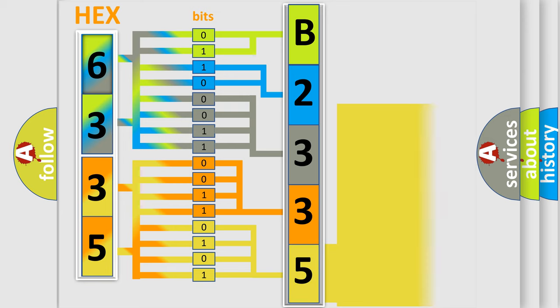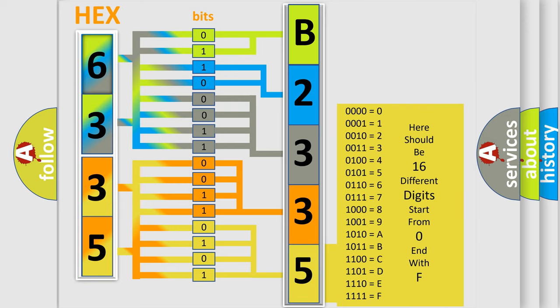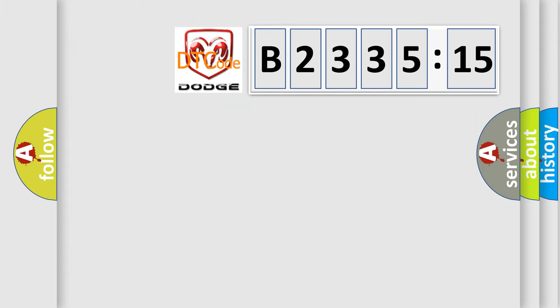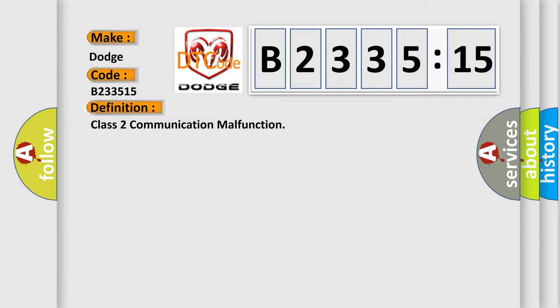A single byte conceals 256 possible combinations. We now know how the diagnostic tool translates the received information into a more comprehensible format. The number itself doesn't make sense unless we can assign information about what it actually expresses. So, what does Diagnostic Trouble Code B233515 mean for Dodge car manufacturers?